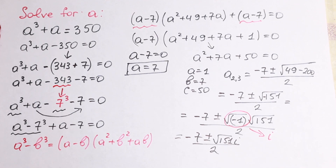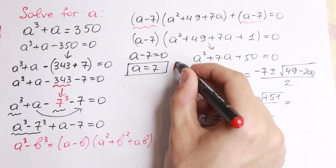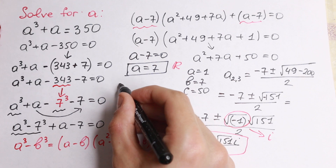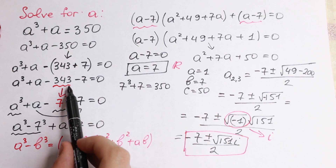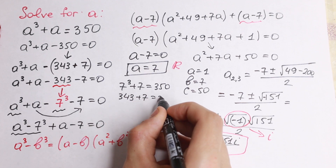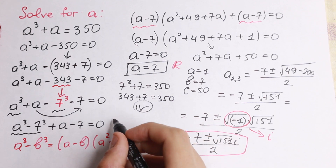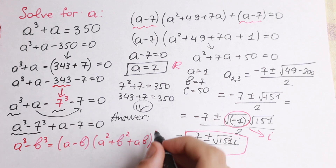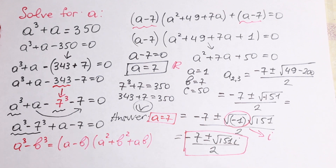These are our complex roots. If you're interested in the real number root, we have a equal to 7. We can check it real quick: 7 cube plus 7 equals 350, which is good because we already know 343 equals 7 cube, and 343 plus 7 equals 350, which is absolutely correct. So our answer is a equal to 7. And if you're interested in complex numbers, you will have two more complex roots.